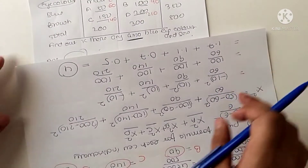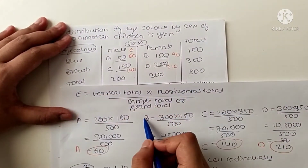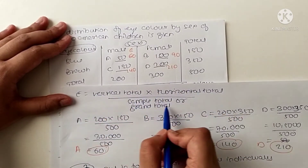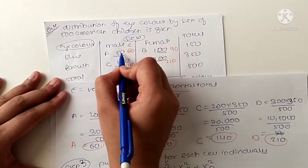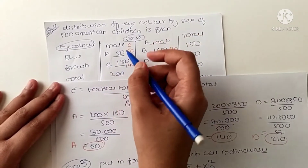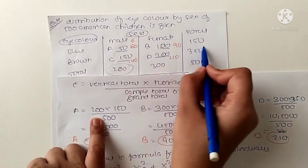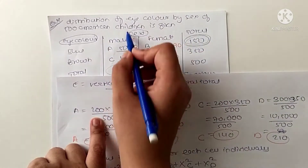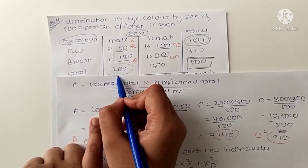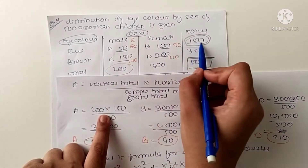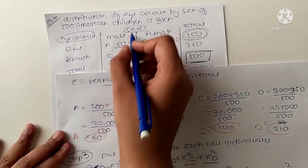To calculate the expected value, we use this formula: vertical total multiplied by horizontal total divided by the grand total. For cell A, vertical total is 200, horizontal total is 150, divided by grand total 500, giving an expected value of 60.